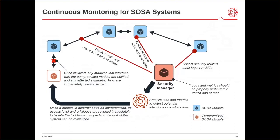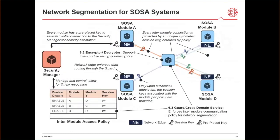Instead, privilege management needs a flexible network segmentation approach. Since we're dealing with a perimeter-less environment, we try to create software-defined security perimeters among resources of different sensitivities. For example, every connection between modules can be isolated by encryption with symmetric session keys. If a module is compromised, revoking that module will only affect the modules that have been communicating with the compromised module, but not necessarily the entire system.